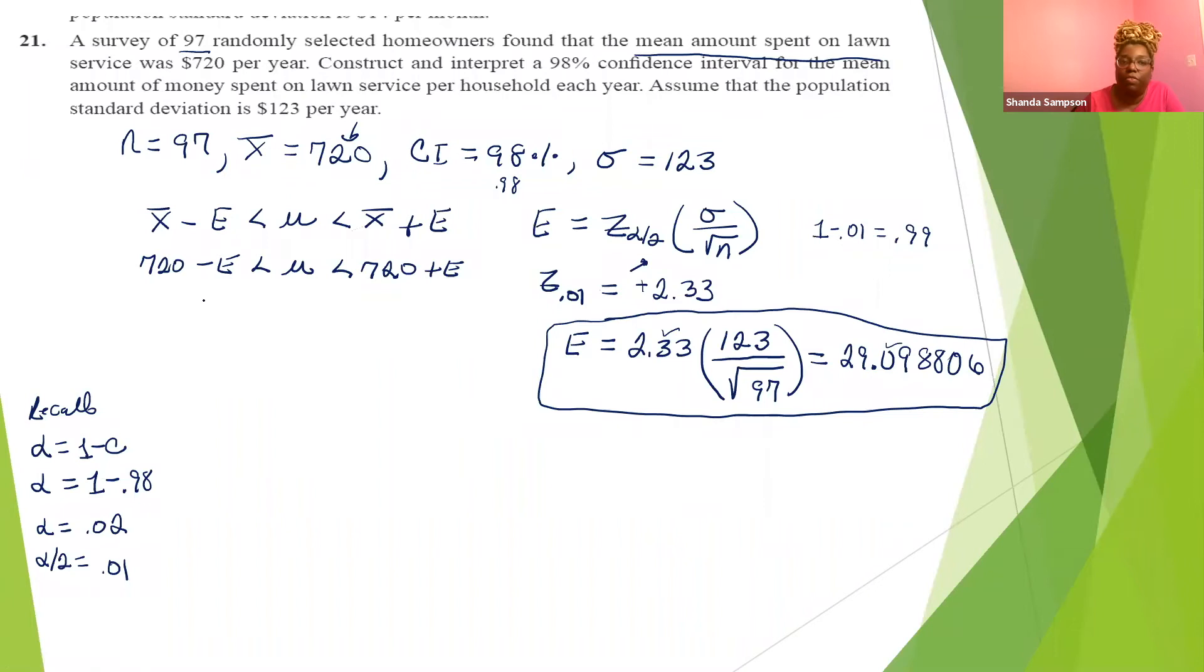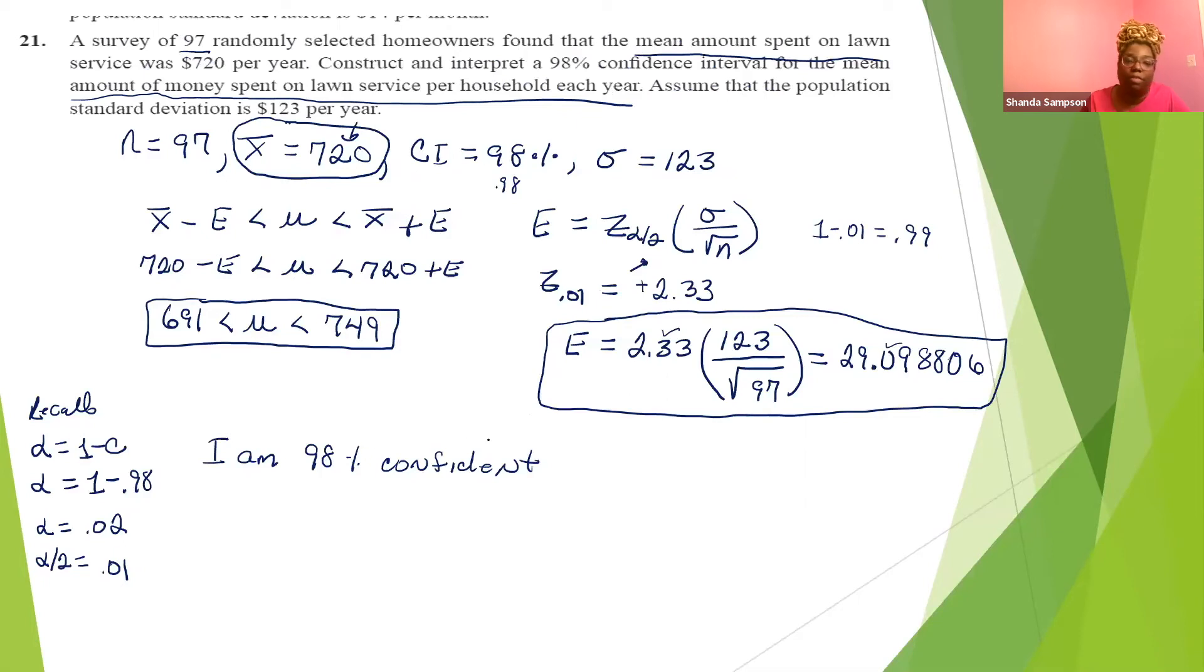So now we can write our final answer. It's good enough for you to leave E here because you figured out E over here. Your calculator gave you something. Remember, you need to round this back to your original number that was given to you. Even though they gave you 690.95, your confidence interval is going to be 691 is less than mu is less than 749. This is your confidence interval.